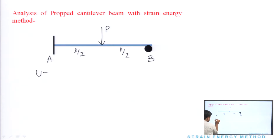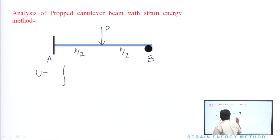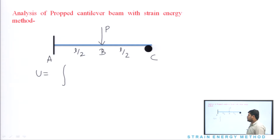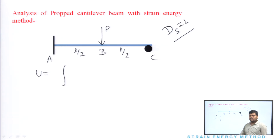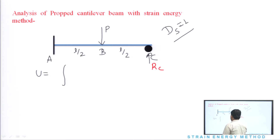Hum jaante ki strain energy kya hoti hai. The structure has a degree of indeterminacy of one, meaning using equilibrium equations alone, hum ek unknown ki value nahi nikal sakte. To, hum ek unknown ki value strain energy method se nikalte hain. RC ki value find out karte hain — vertical reaction at C — with the help of the strain energy method. RC nikal aayega toh baaki automatically nikal aayega.